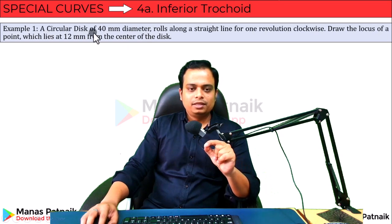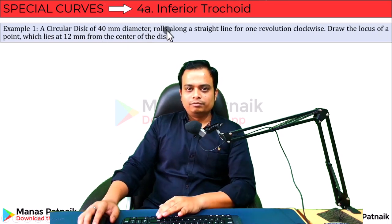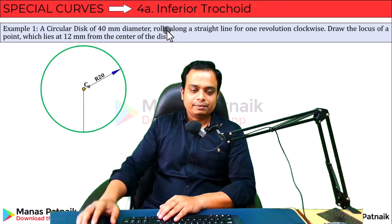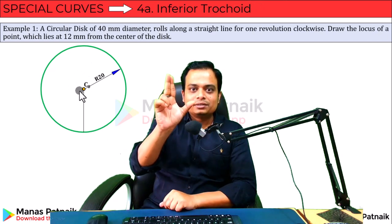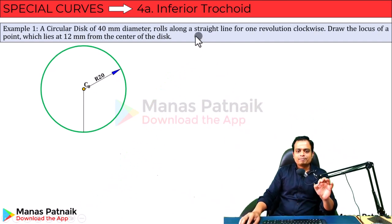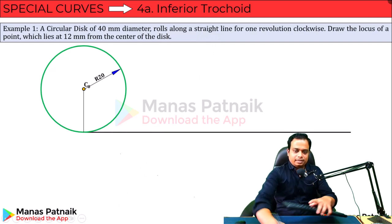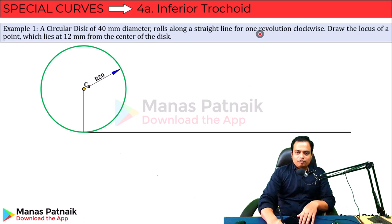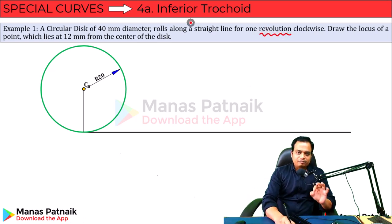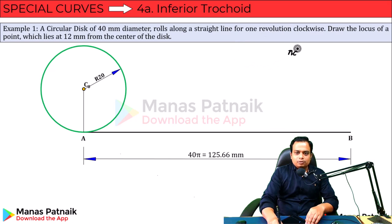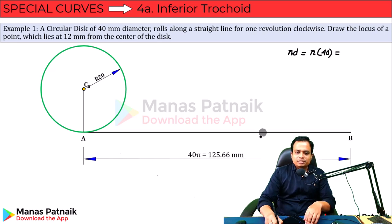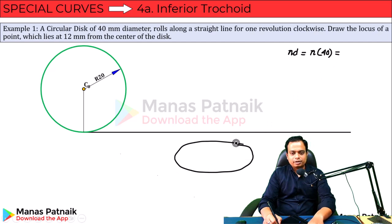There is a circular disc of 40mm diameter. If the diameter is 40, then the radius is 20. With any point on your sheet as the center and a radius of 20mm in your compass, you can create this circle. It is going to roll along a straight line. For one revolution, the distance traveled equals πd, which is π times 40, giving us 125.6mm.